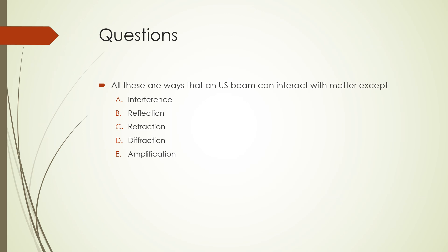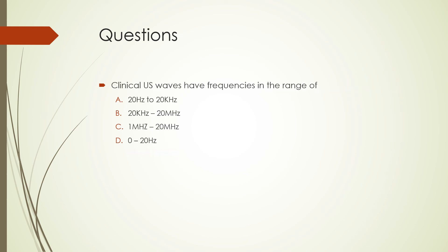Let's finish up with a few questions. First question: all of these are ways that an ultrasound beam can interact with matter except — interference, reflection, refraction, diffraction, or amplification. The correct choice is amplification. Next question: clinical ultrasound waves have frequencies in the range of — 20 Hz to 20 kHz, 20 kHz to 20 MHz, 1 MHz to 20 MHz, or 0 to 20 Hz. The correct choice is 1 MHz to 20 MHz.